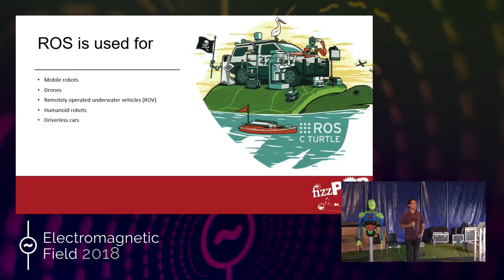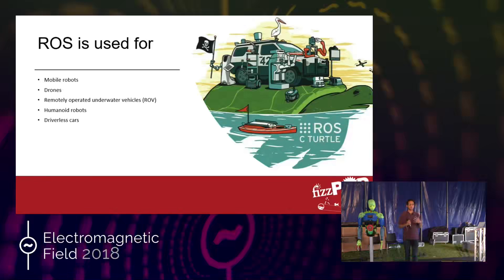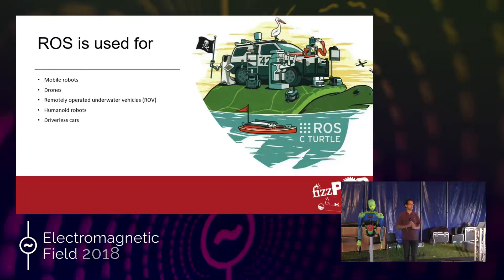ROS is designed to work on any kind of robot, from humanoids to armed robots to cars to drones. It does that by abstracting everything and making all the parts of the robot very modular. So if you want to move a robot around, you command the robot to move in three dimensions — forward or sideways — and then you have to write your own software to understand that command and actually move your robot.